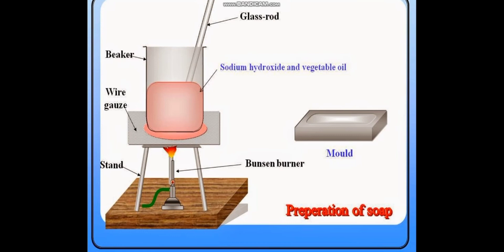Yahan apparatus set kiya hua hai. Beaker mein jo brown color nazar aa raha hai woh sodium hydroxide aur vegetable oil mix kiya hua hai. Neeche wire gauze (jaali) hai, uske neeche Bunsen burner laga hua hai, aur yeh tripod stand hai jiske upar beaker rakha gaya hai. Glass rod se stir kiya jayega. Jab soap tayyar ho jaye — liquid form mein hoga — toh ise ek khaas shape ke box mein daalen. Jab cool down ho jayega toh us box ki shape mein saabun ban jayega.